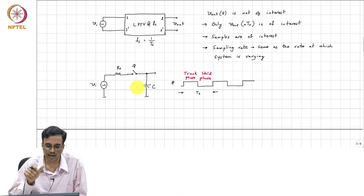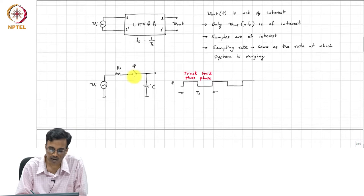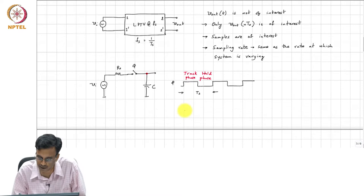And once the track phase is over and then you open the switch, the capacitor voltage is held. So, the representative waveform, output waveform is basically something like this.